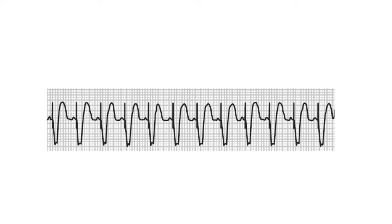This ECG shows P with QRS, P with QRS — every P is followed by a QRS. This tracing is from a dual chamber pacemaker, but in this case the pacemaker is sensing the atrium and tracking the ventricle in order to maintain AV synchrony. This is another example of a dual chamber pacemaker.